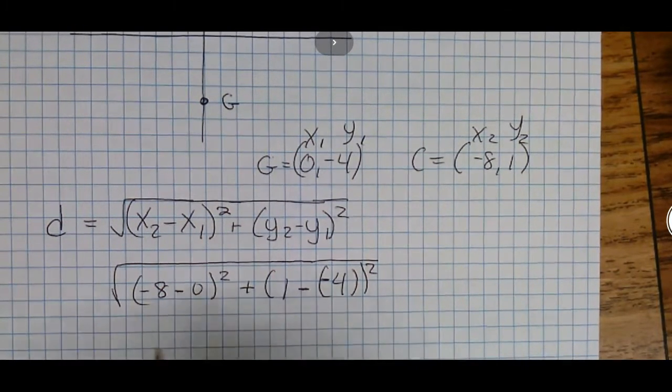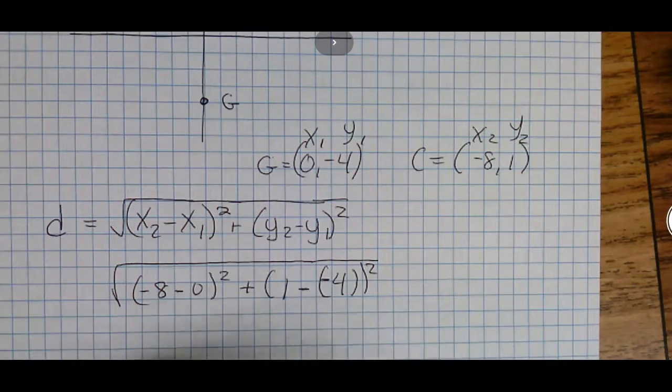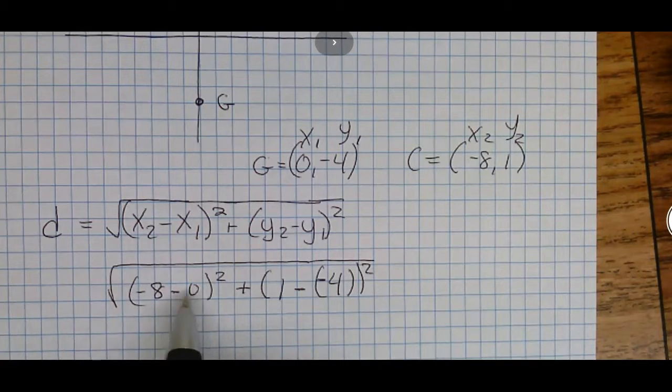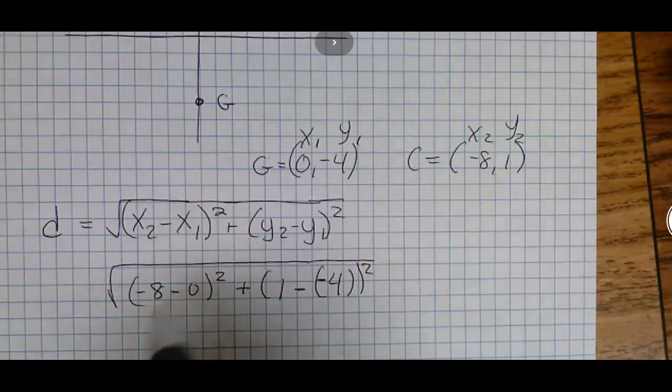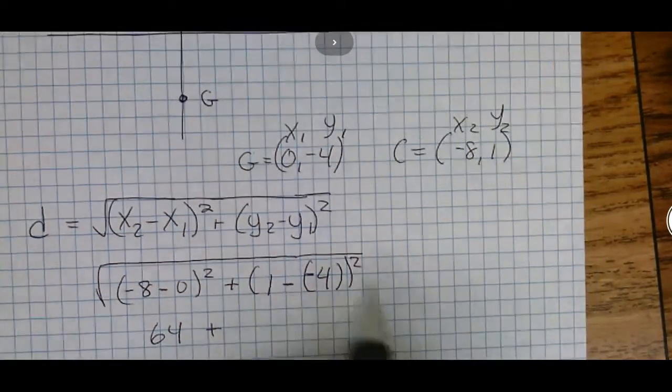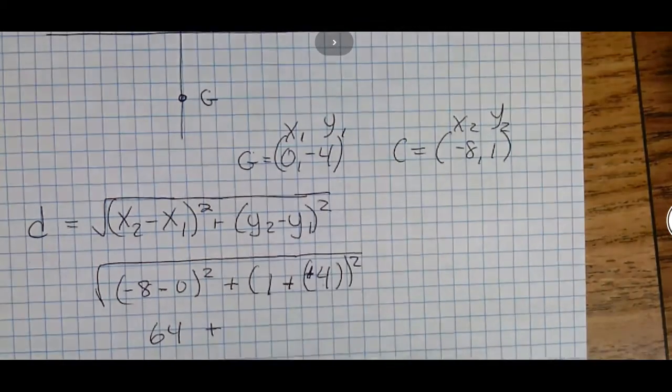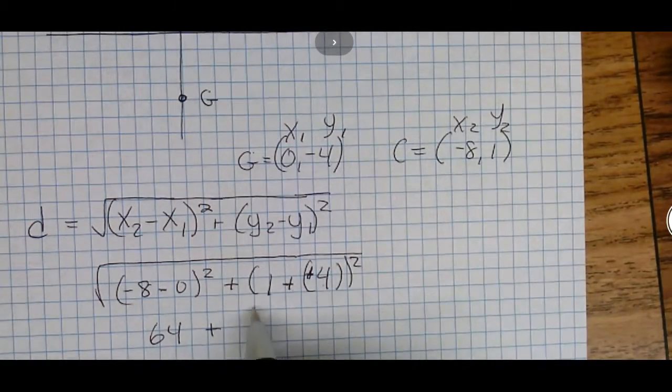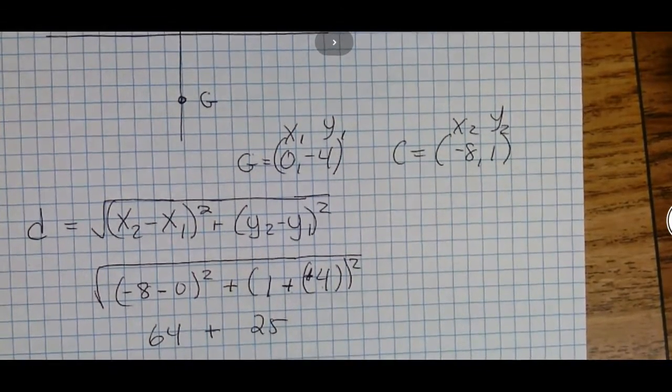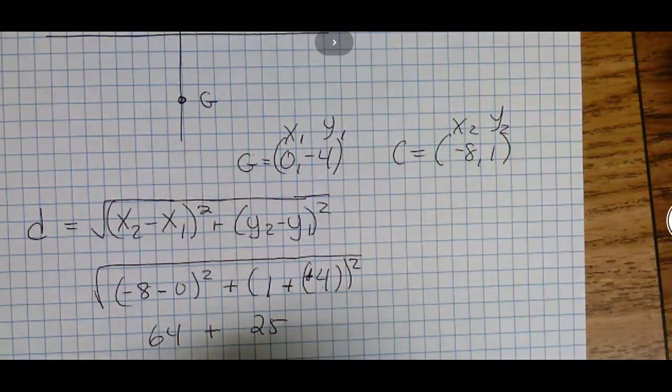The only thing that might give us trouble is if we forget how to add and subtract positive and negative numbers. We have -8 - 0 is -8, square it and we get 64. We add 64 to 1 minus -4, but remember if we're minusing something we can change the sign and add. That gives us 1 + 4 = 5, square it is 25.